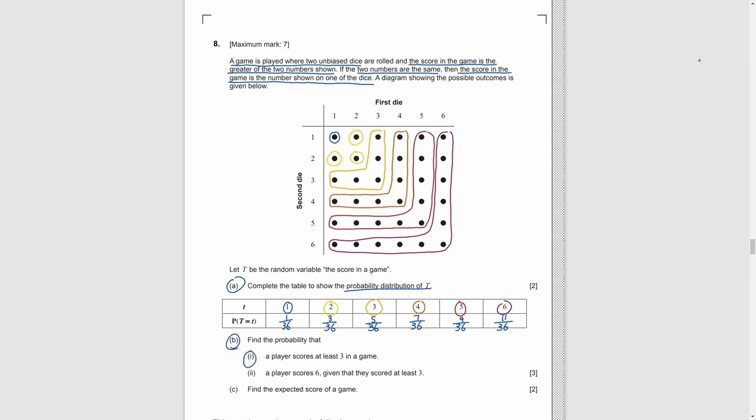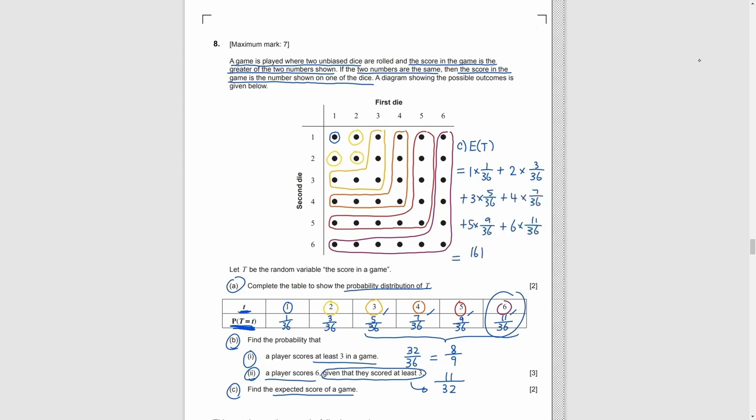Part B. We need to find the probability of scoring at least 3 in the game. That means we need to score 3, 4, 5, or 6 in the game. So we just need to add the probabilities of these 4 situations together. Next, we need to find the probability of scoring 6 given that they already scored at least 3. As there are 32 cases of scoring at least 3 and 11 cases of scoring 6, so the final answer is just 11 over 32. Part C. We need to find the expected score of the game. Expected value is just the sum of all the values times their own probabilities together. So we just use 1 times 1 over 36 plus 2 times 3 over 36 plus etc. Finally, we get 161 over 36.